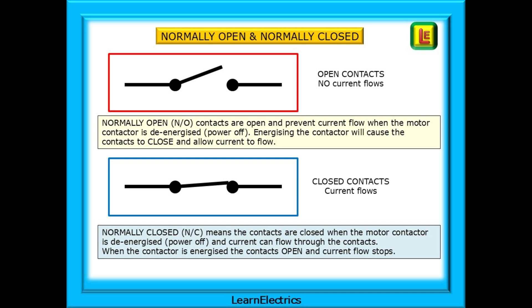So, what is normally open and normally closed? Normally open, or NO contacts, are open and prevent current flow when the motor contactor is de-energised, in other words, with the power off. Energising the contactor will cause the contact to close and allow current to flow.